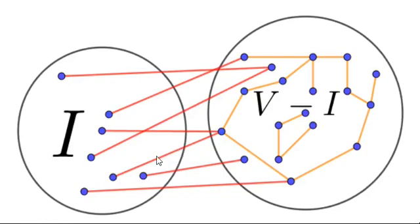I have partitioned the vertex set of the given graph into two sets. One set is I and the remaining set is V minus I. So I is corresponding to the independent set.